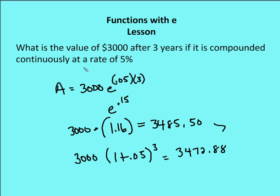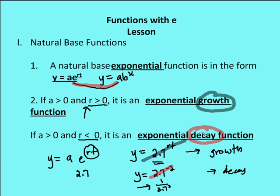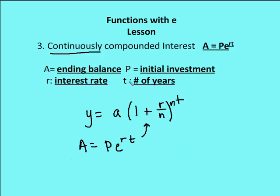The value of E, when we compound continuously, gives a result greater than compounding at any non-continuous rate. Quick overview of E: it's the natural base, derived from (1 + 1/n)^n as n approaches infinity. It's an irrational number with no end to its decimals, approximately 2.718. The natural base exponential model y = AE^(RT) can be either growth or decay depending on the sign of R, and it helps us determine what happens to a value compounded continuously. Join us next time for practice problems on E.